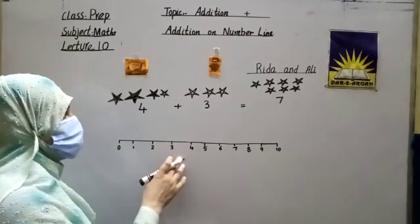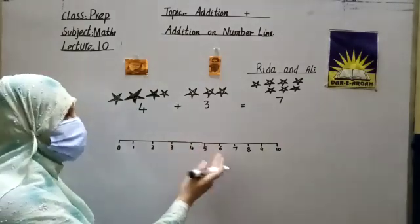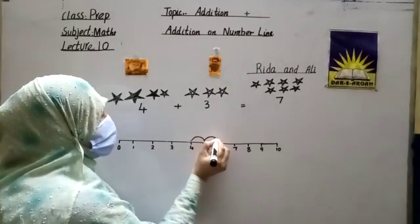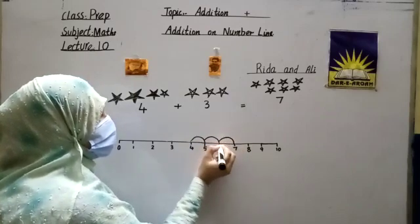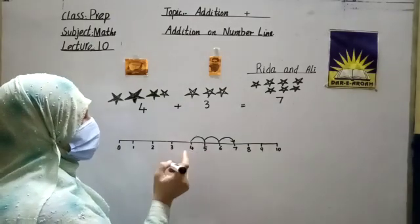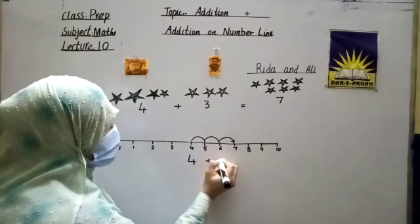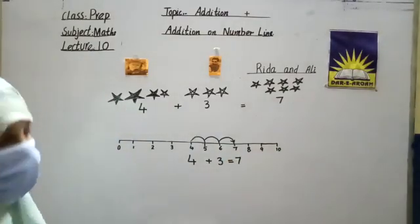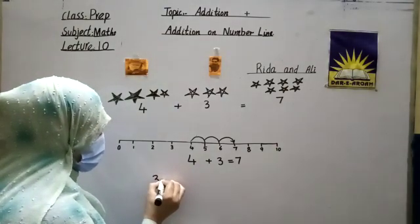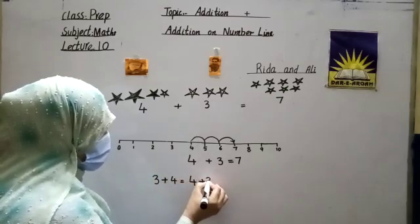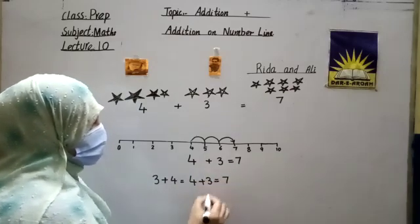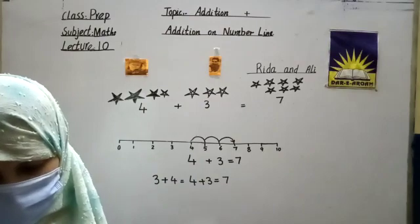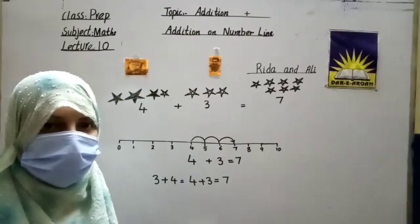Now we use the number line to solve this question. We move left to right — we start at 4 and jump 3 more: 1, 2, and 3. The question is 4 plus 3 equals 7. It means if I write 3 plus 4, it equals 4 plus 3 — the answer is 7. As I told you at the start of this lecture, whether you start from a bigger or smaller number, the answer remains the same.